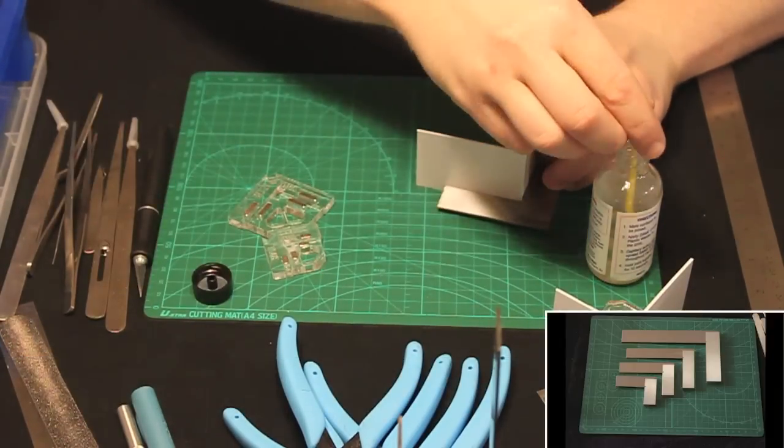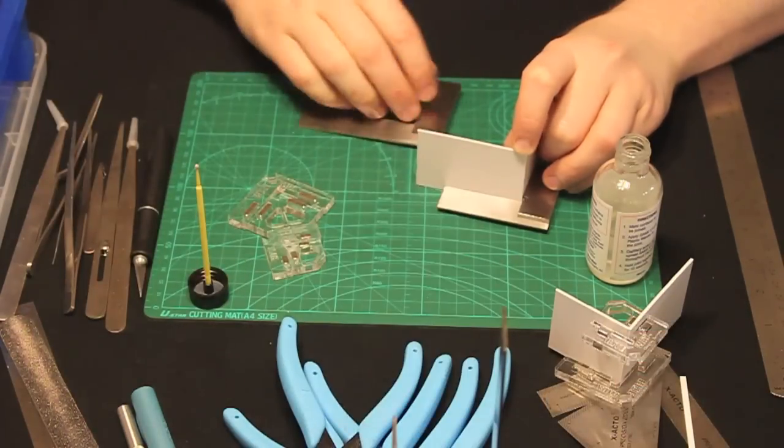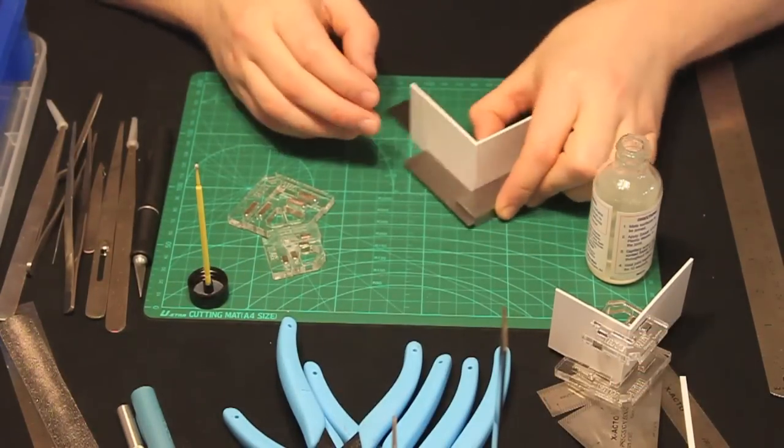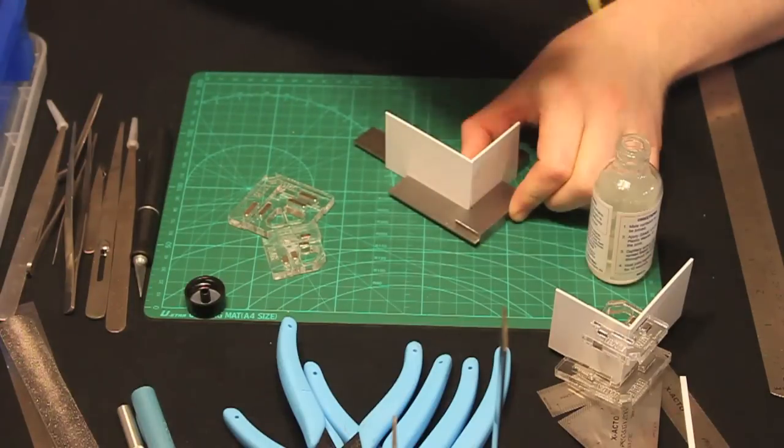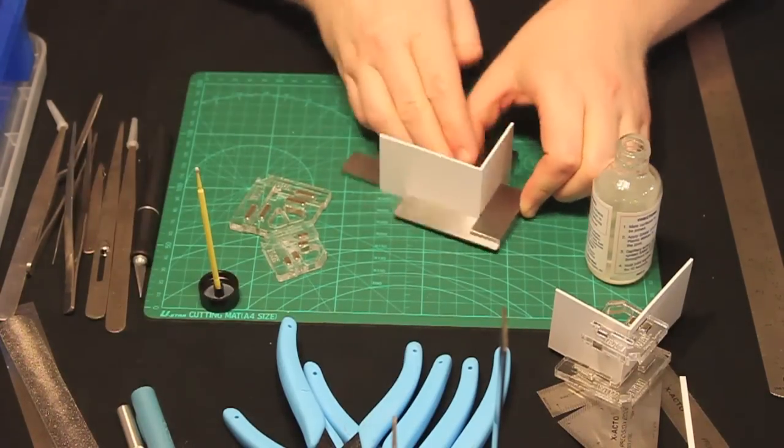This is another method I use for 90 degree corners. It's just a simple steel square. I have it in 2, 3, 4, and 5 inch sizes. It's a real simple fixture to use. You just put your pieces against it and apply your adhesive and then you just need to hold it there until your adhesive dries enough to hold it in place.